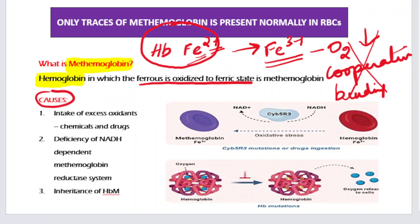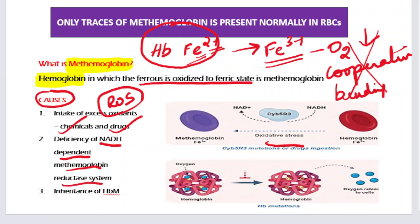Methemoglobin is hemoglobin in which the ferrous iron is oxidized to the ferric state. The causes of this conversion include: reactive oxygen species and oxidative stress, certain chemicals and drugs, deficiency of the NADH-dependent methemoglobin reductase system, and inheritance of HbM — a hemoglobin variant with a higher propensity to produce methemoglobin.